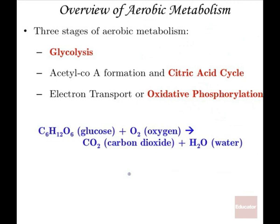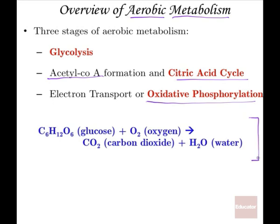Aerobic metabolism occurs in three stages: glycolysis, which is glucose going to pyruvate; the citric acid cycle, where we get formation of acetyl coenzyme A; and the final stage, oxidative phosphorylation. In summary, glucose plus oxygen yields carbon dioxide and water.